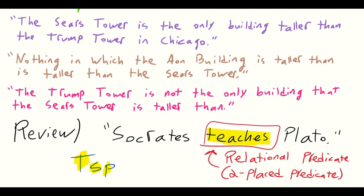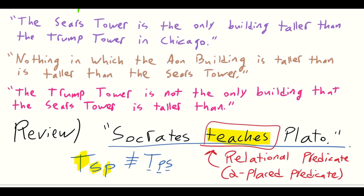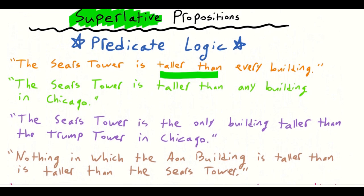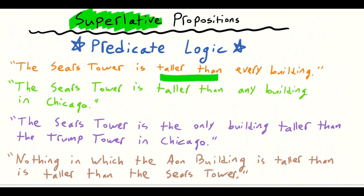Remember, order counts. So T(s, p) is not the same thing as T(p, s), because that says Plato teaches Socrates. With our example, it's saying Socrates teaches Plato, not the other way around — so this clearly doesn't work. So we have a two-place predicate. When we consider these various superlative propositions, for example 'the Sears Tower is taller than every building,' we do have that relational, two-place predicate.